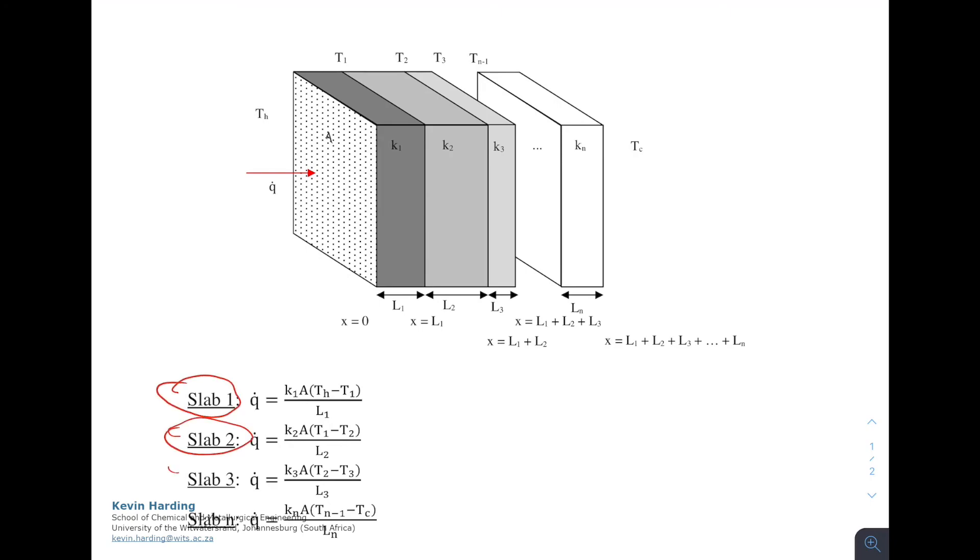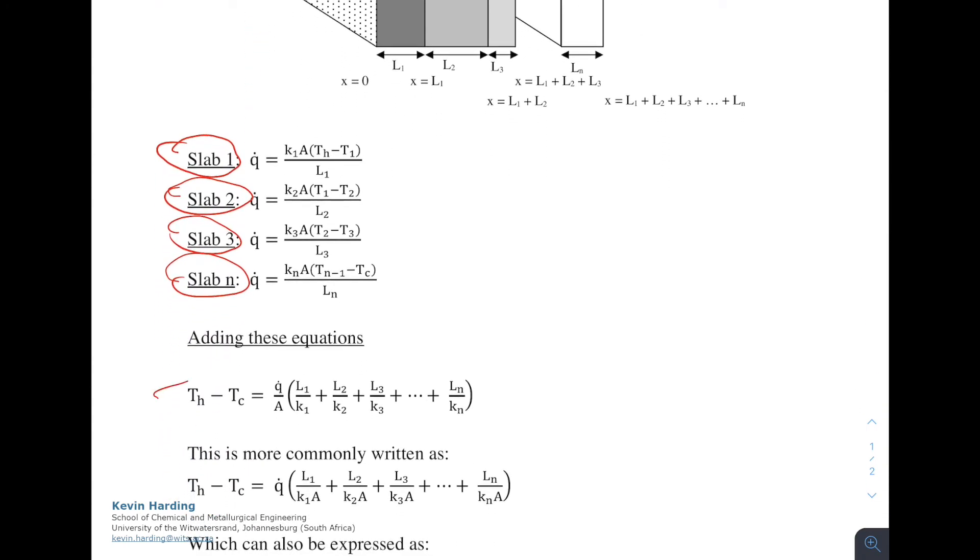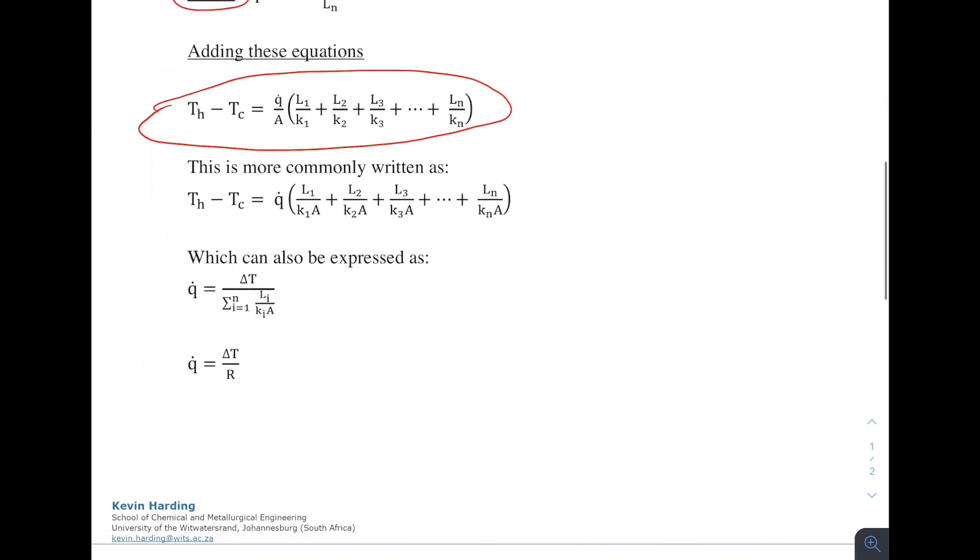This concept can be extended to n slabs in series. We can add all equations together to get T hot minus T cold equals Q on A plus the L1 on K1 terms. It's more common to write this as Q equals delta T divided by the sum from i equals 1 to n of the Li over Ki A terms. That term on the bottom is more commonly written as R, where R is a thermal resistance.